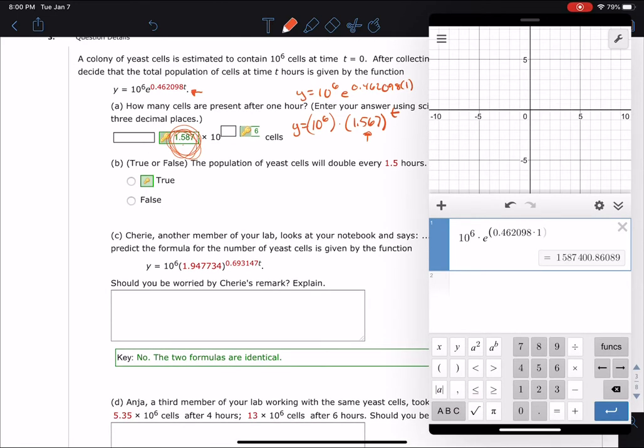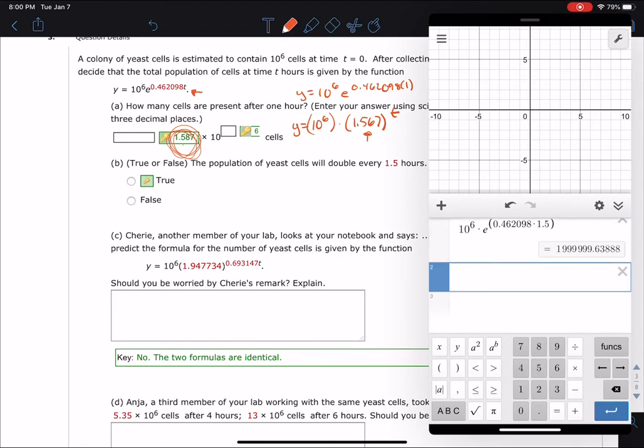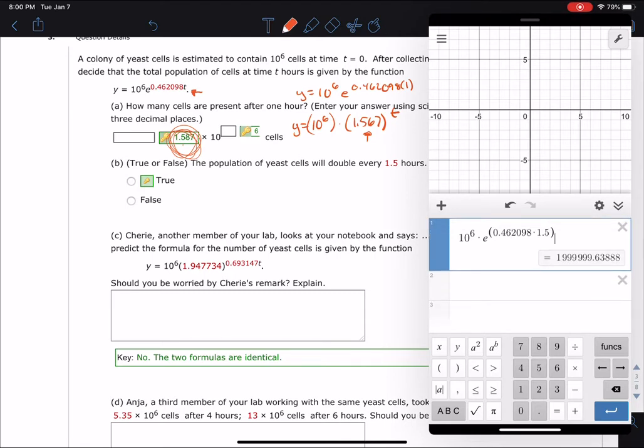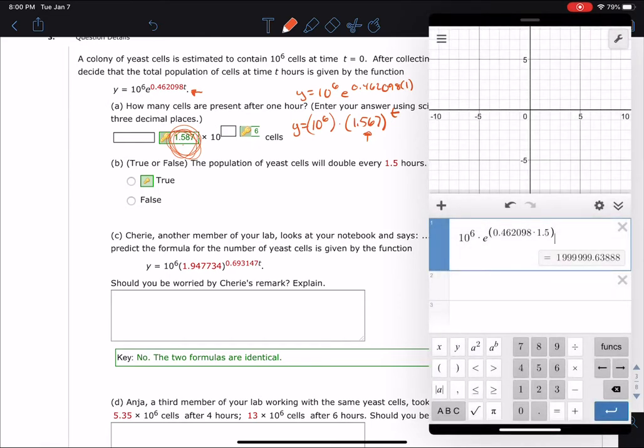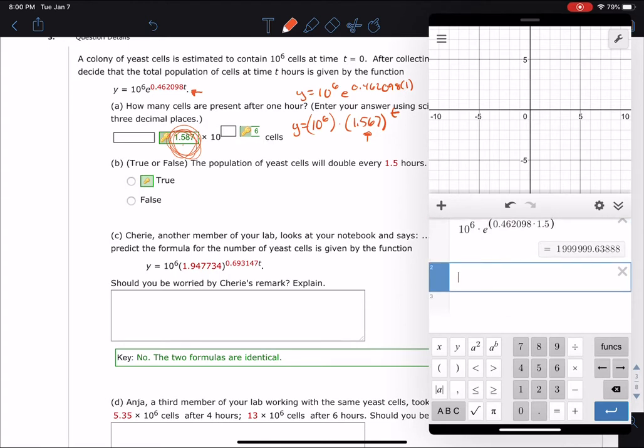So the population of yeast cells will double every 1.5 hours. So let's check. So let's make this 1.5 hours on Desmos. And I'm going to see if that number, see if I can cut and paste. I don't know how to cut and paste this.